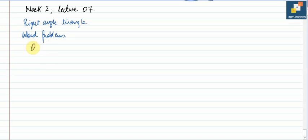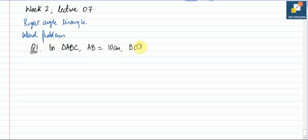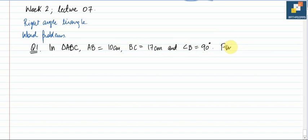Starting with question number 1: in a triangle ABC, AB is equals to 10 centimeter, BC is equals to 17 centimeter, and angle B is equals to 90 degrees. You need to find the length of AC. That is our question.